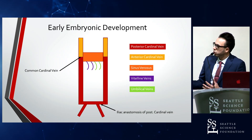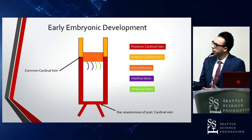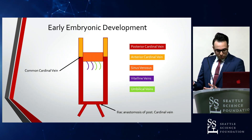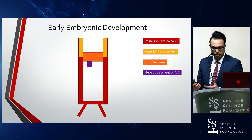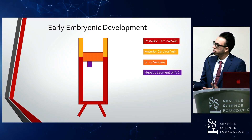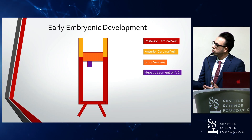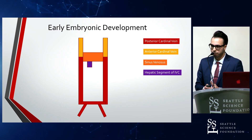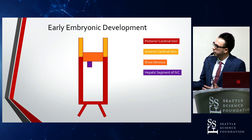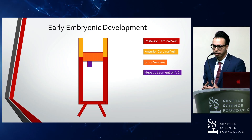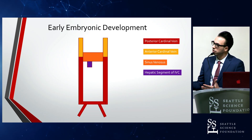Here we have two pairs, left and right. You have the vitelline veins, which drain blood from the yolk sac, and then paired umbilical veins, which drain blood from the placenta. In the first major embryonic development pattern, we're starting to see regression of the left vitelline vein and the paired umbilical veins. The right vitelline vein is forming the hepatic segment of the IVC. Remnants of the vitelline vein will also form the superior mesenteric vein as well as the splenic vein.